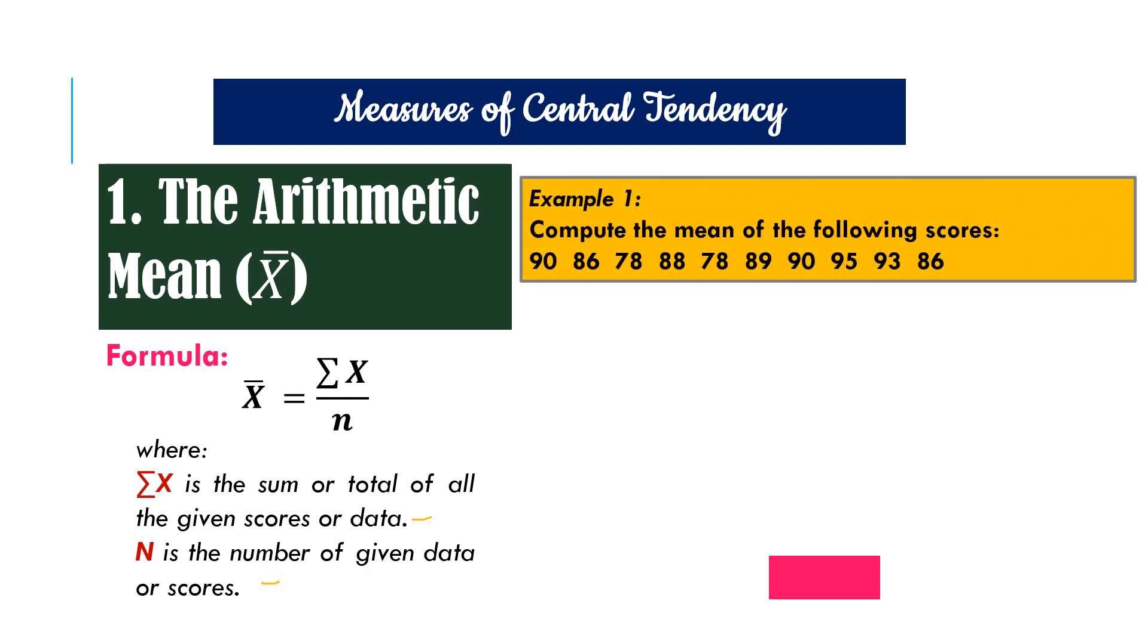Let us have example number one. It says there compute the mean of the following scores. The scores are as follows: 90, 86, 78, 88, 78, 89, 90, 95, 93, and 86.